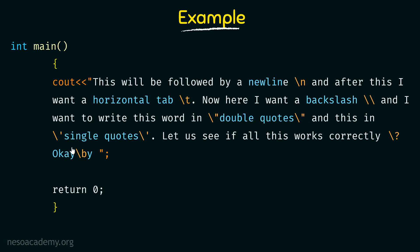And for the word 'single quotes' in single quotes, similarly just like for double quotes, we use the escape sequence backslash single quote. The word 'single quotes' will be enclosed within single quotation marks. Then there is a sentence which says 'let us see if all this works correctly', and I want a question mark symbol, so I use a backslash and then a question mark. And then it says 'okay' — I write 'okay ay' with an extra y. I want to cut out the extra y by using the backspace escape sequence, backslash b.